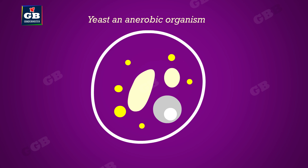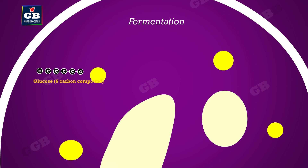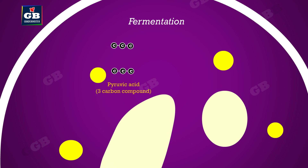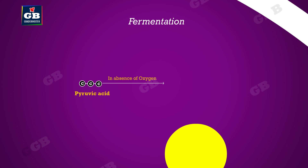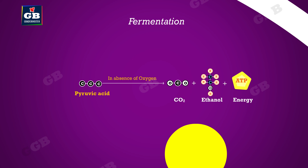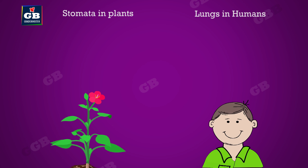In the case of yeast, an anaerobic organism, glucose is converted to pyruvic acid, which releases energy by converting into ethanol and carbon dioxide. This process is called fermentation. The energy released in aerobic respiration is greater when compared with anaerobic respiration, but aerobic respiration requires a continuous supply of oxygen.